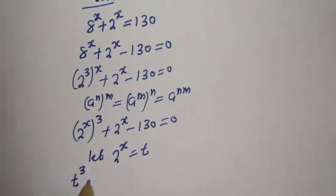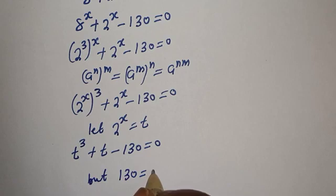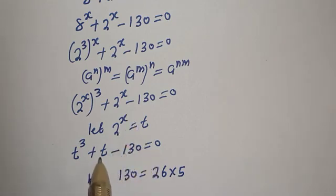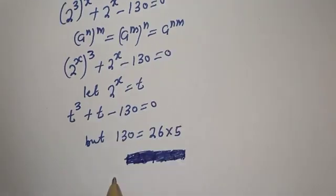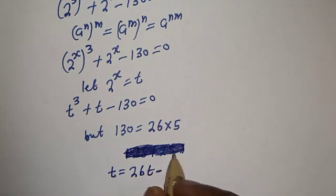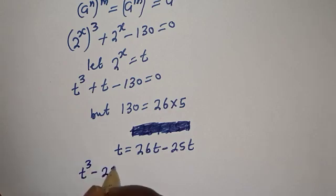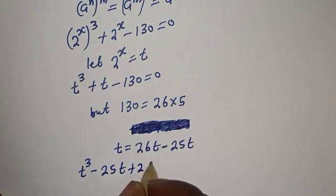Let t equal 2 raised to power s. Then we have t raised to power td plus t minus 130 is equal to 0. Now 130 equals 26 multiplied by 5. The largest term here is 26. If we have t equal to 26t minus 25t, substituting gives t raised to power t minus 25t.